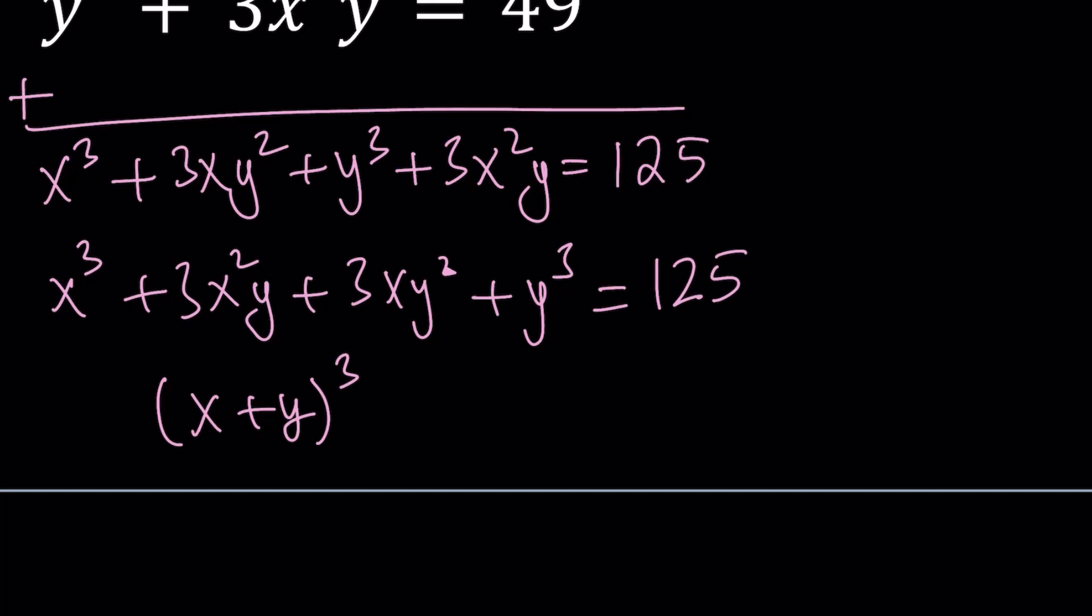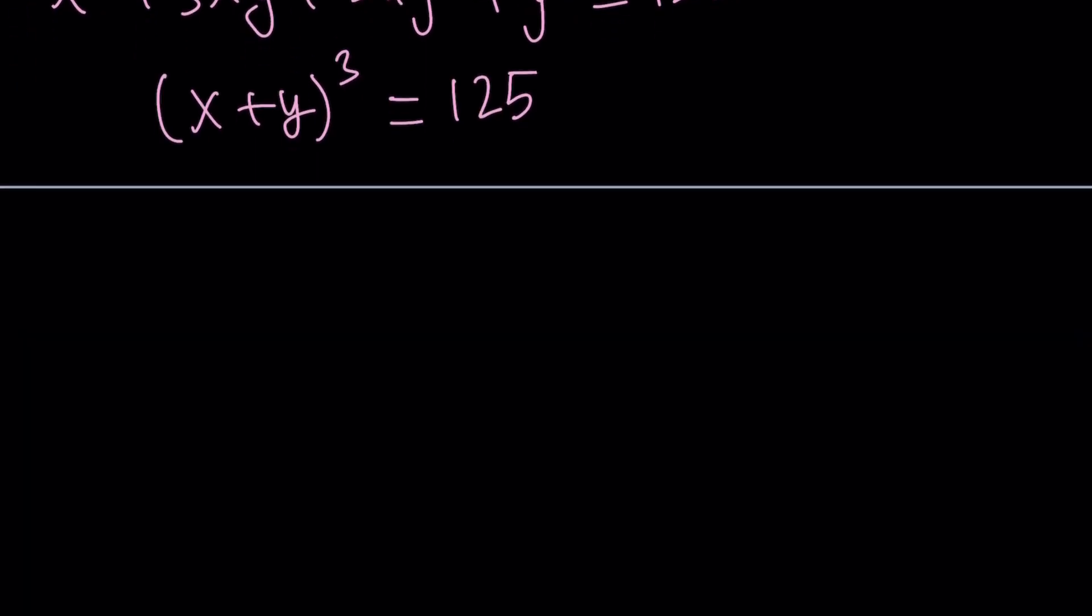That is a perfect cube by the binomial theorem. The coefficients are 1, 3, 3, and 1. You know, Pascal's triangle gives you those numbers, so on and so forth. But by setting this equal to a perfect cube, we have a perfect cube on the right hand side and the left hand side, so everything is perfect.